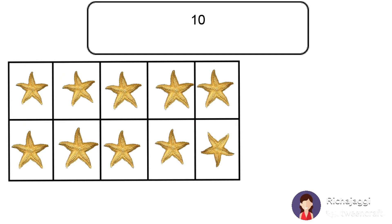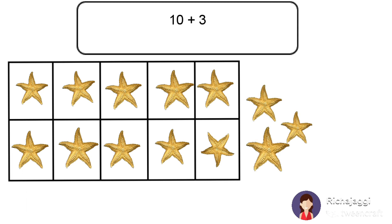Adding 10. This is a 10's box and there are 10 starfishes in it. And 3 starfishes are outside the box. So how many starfishes in all? 10 inside the box and 3 outside the box. So 10 plus 3 is equal to 13.